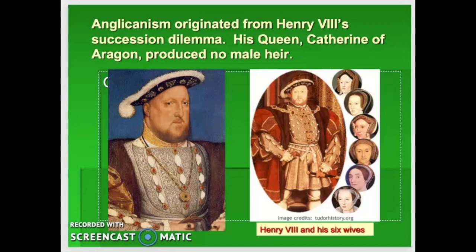Catherine was about 12 years older than Henry, an odd match, but Henry was used to having whatever women he wanted. The problem was Catherine could not produce a legitimate male heir — she produced stillborn males and one healthy girl, but no legitimate male. Henry was determined to have a male heir so nobody would question the Tudor line. When Catherine became obviously incapable of bearing more children, Henry politely asked the Pope to annul their marriage. The Pope said no — nothing wrong with the marriage, sorry about the male heir, that's the way the cookie crumbles.